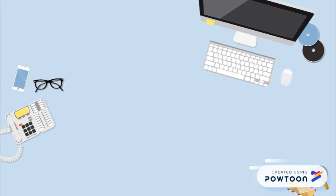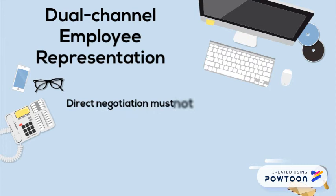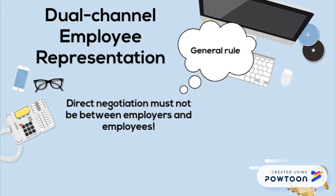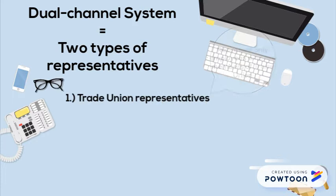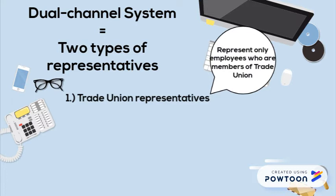Moreover, the employer representation is composed of a dual channel. The most important rule is that direct negotiation must not be between the employer and the employee, but it is reserved for the employee's representatives. By calling it a dual channel, it refers to the two types of representatives. The first is the trade union representatives who represent only employees who are members of the trade unions. The second are the elective representatives who represent all of the employees in the workplace.